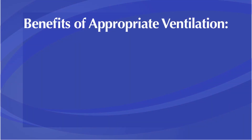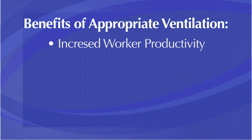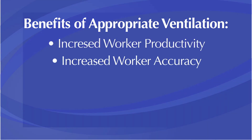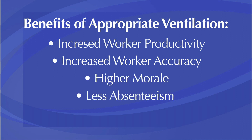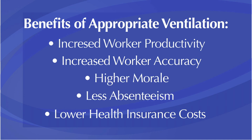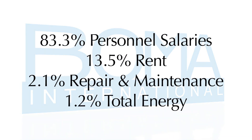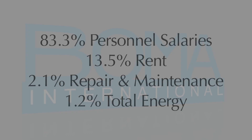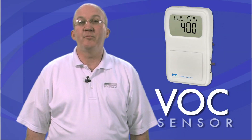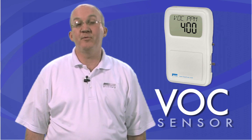Numerous domestic and international studies show that appropriate ventilation actually saves money through increased worker productivity, increased worker accuracy, higher morale, less absenteeism, and lower health insurance costs from fewer and less costly claims. According to a Building Owners and Management Association report, salaries are 83% of a typical business's annual budget while utilities are only 1.2% of that budget. So a tiny increase in total operating costs for appropriate ventilation leads to huge benefits for the employees, which account for 83% of the total budget.